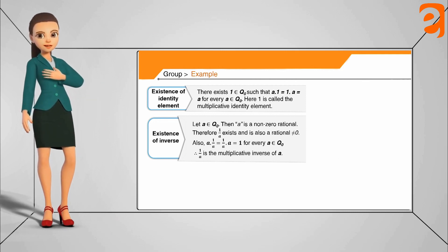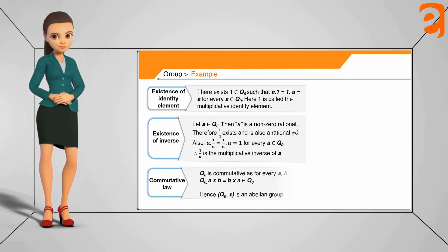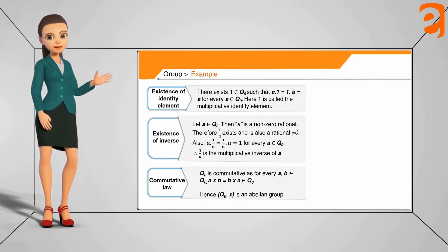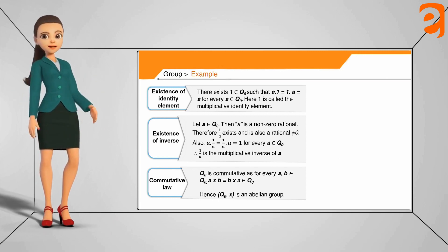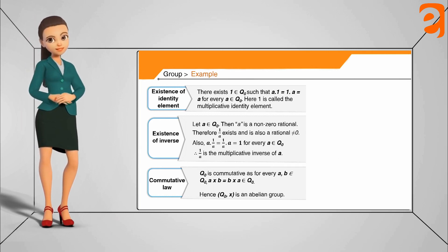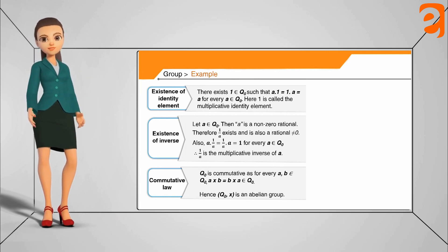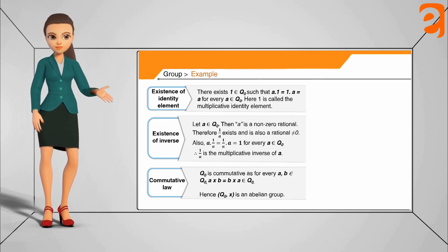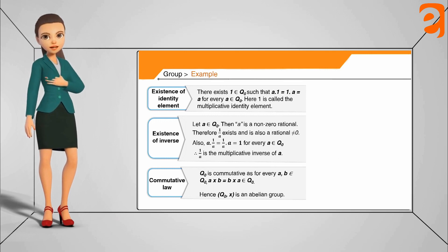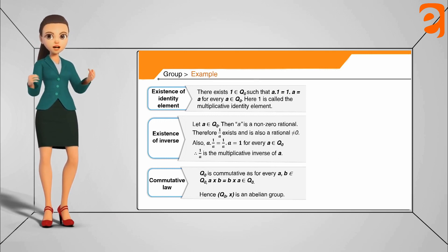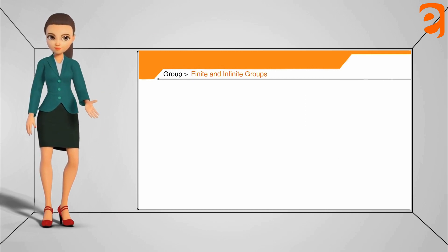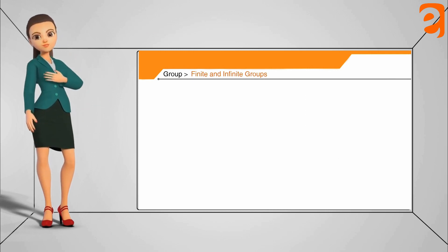Finally, for commutativity: multiplying two non-zero rationals a × b or b × a always gives the same result. So the set of non-zero rational numbers with multiplication is an abelian group.